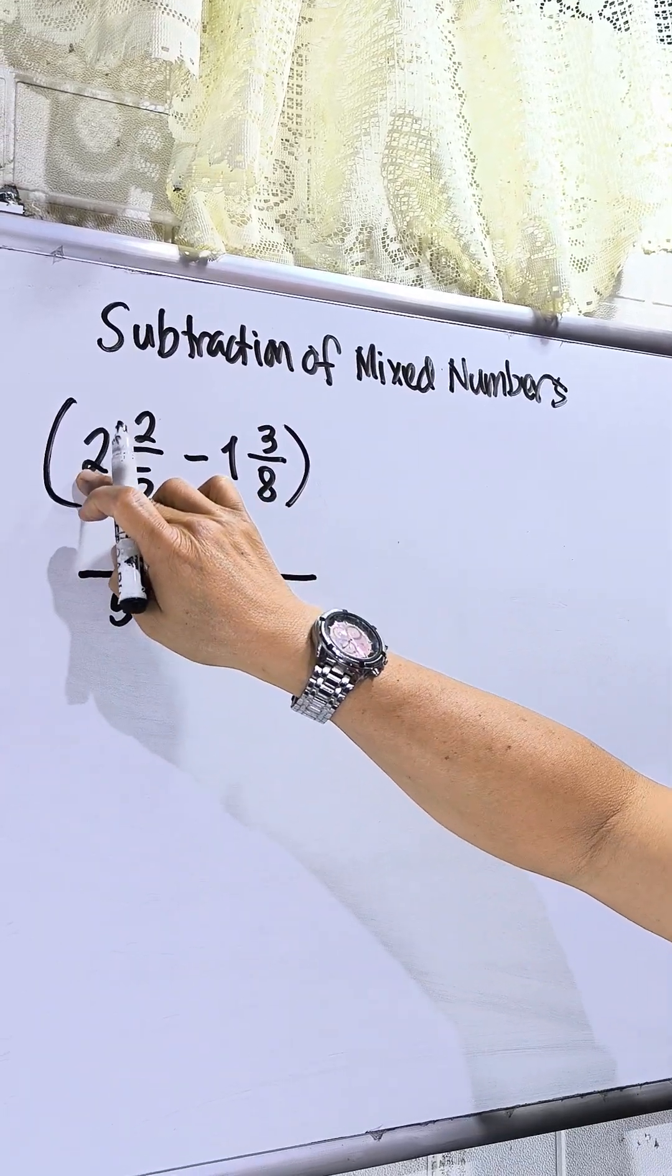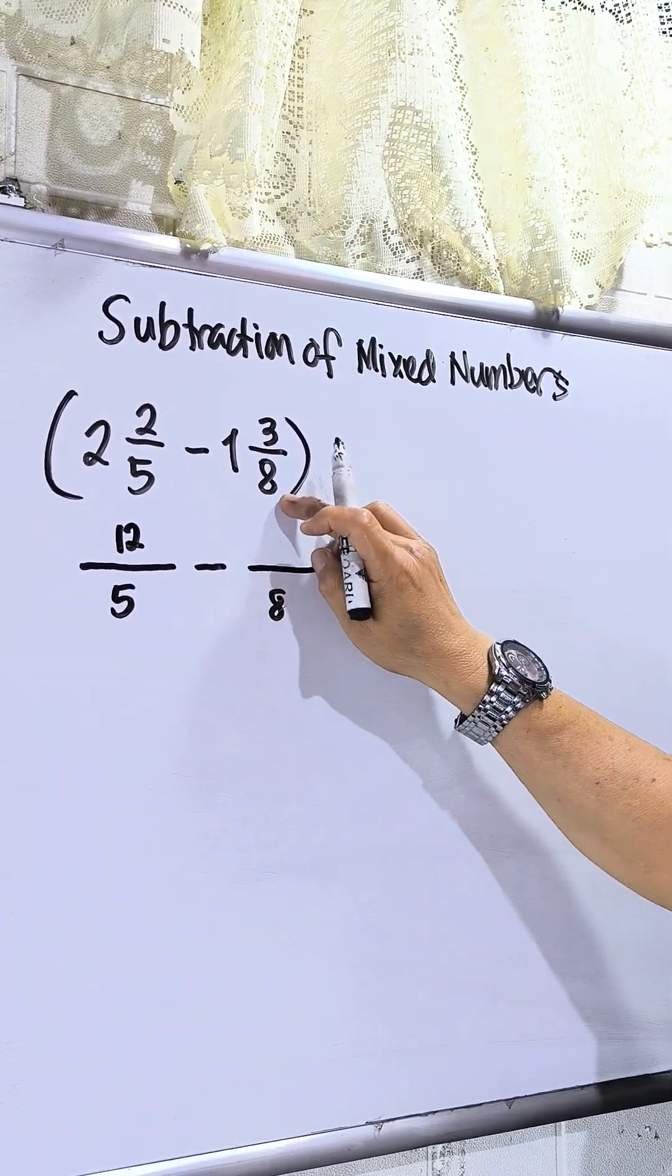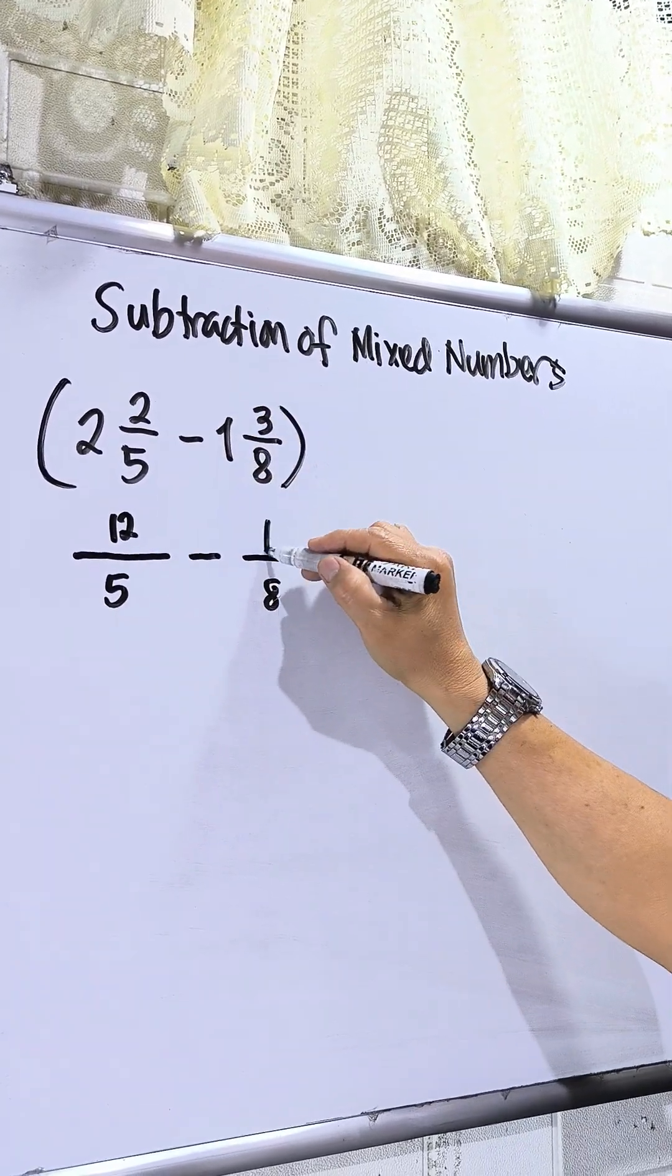Then, 5 times 2, that is 10, plus 2, that is 12. Then, 8 times 1 is 8, plus 3, that is 11.